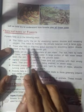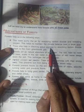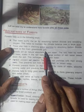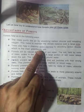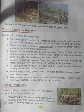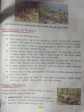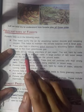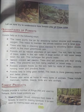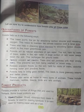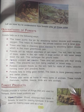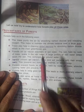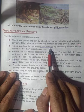Second, trees also help in checking global warming by absorbing carbon dioxide, which is the main greenhouse gas. Global warming means an increase in the temperature of the earth's atmosphere. Carbon dioxide is responsible for global warming. The plants absorb the carbon dioxide and decrease global warming.